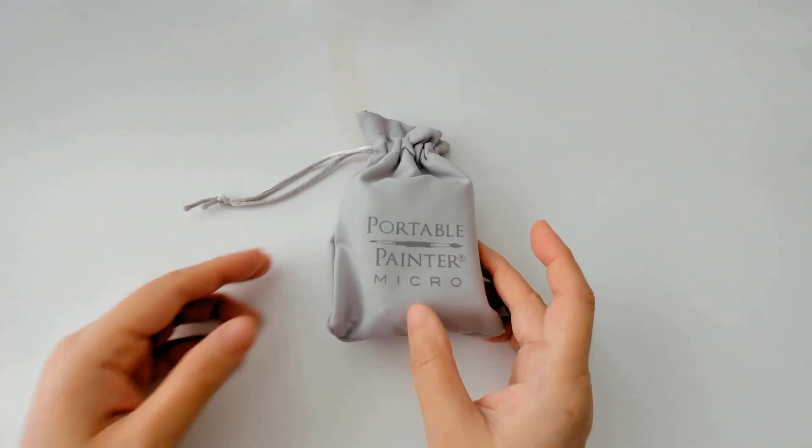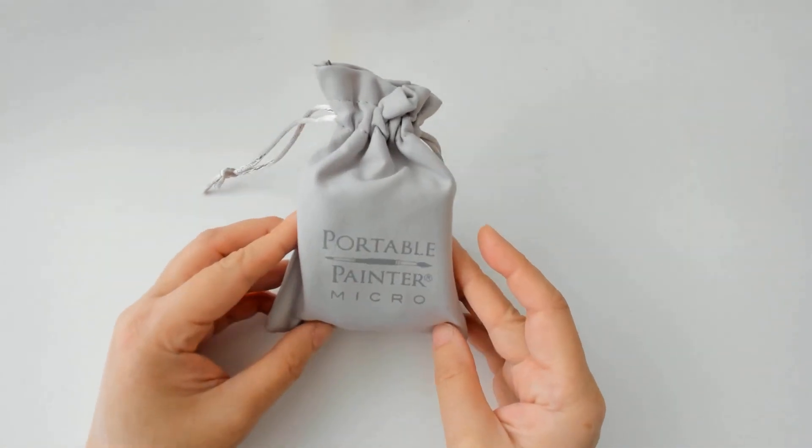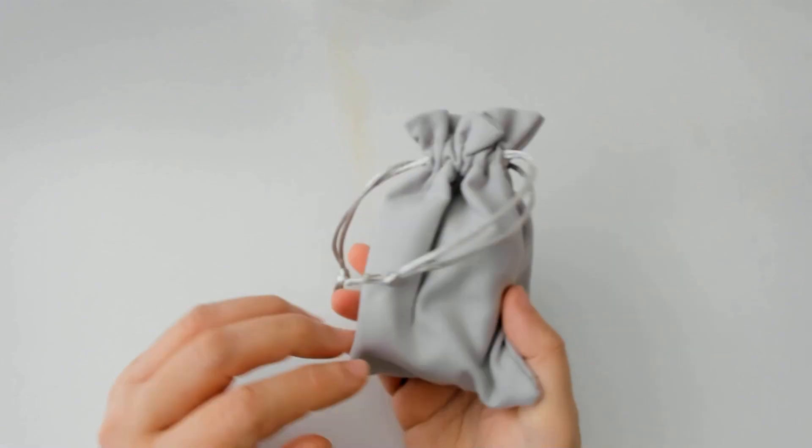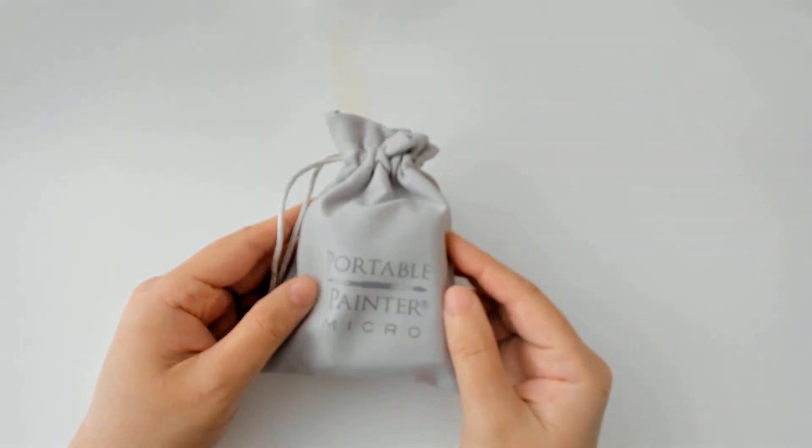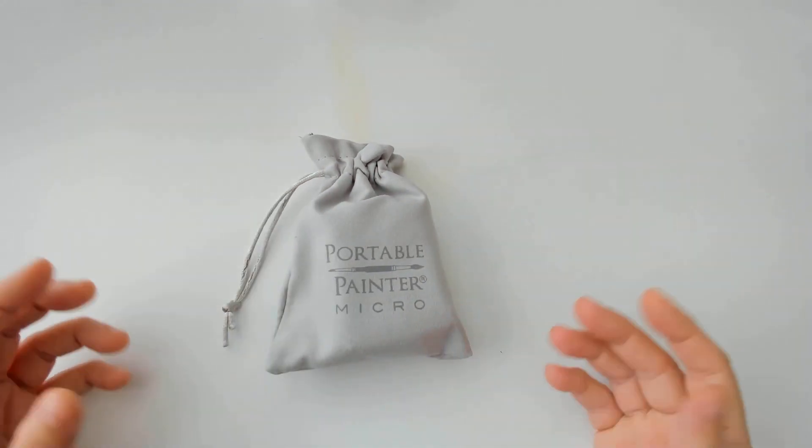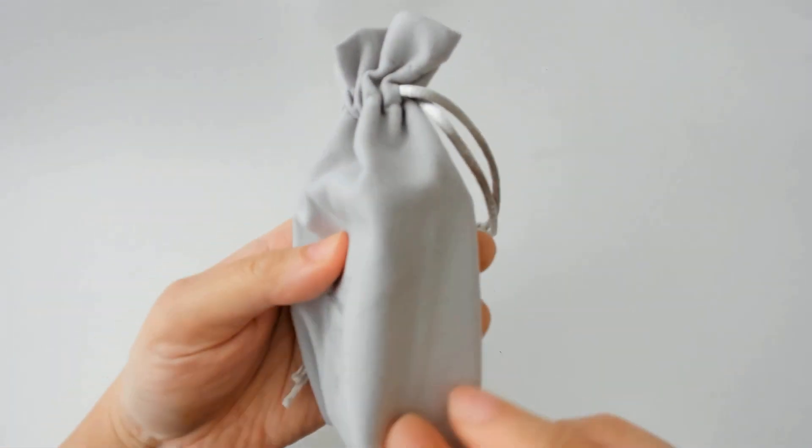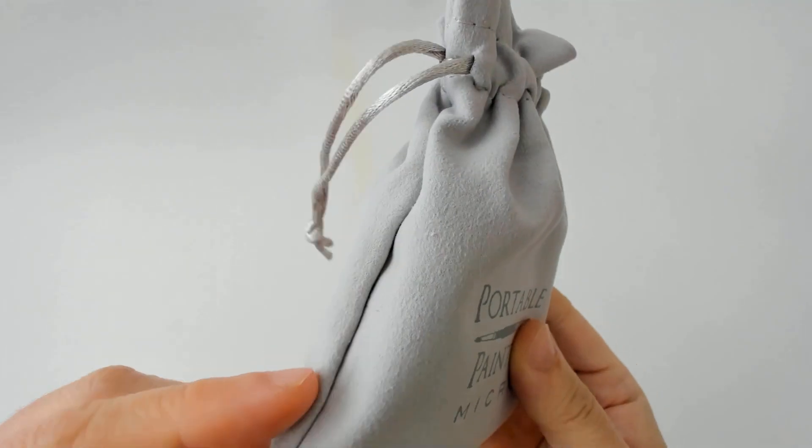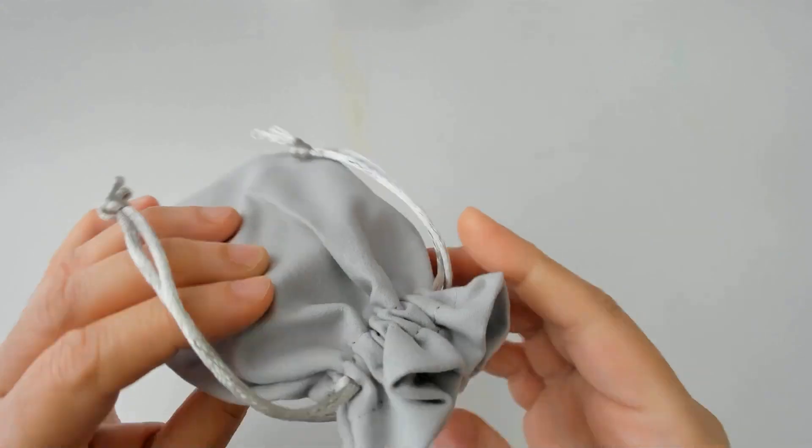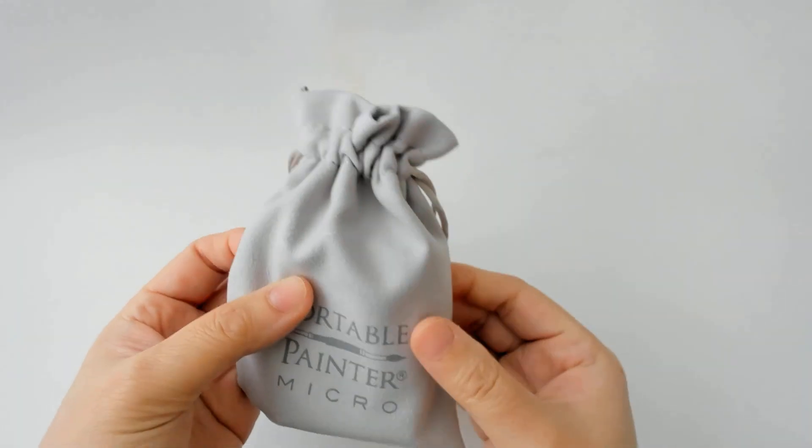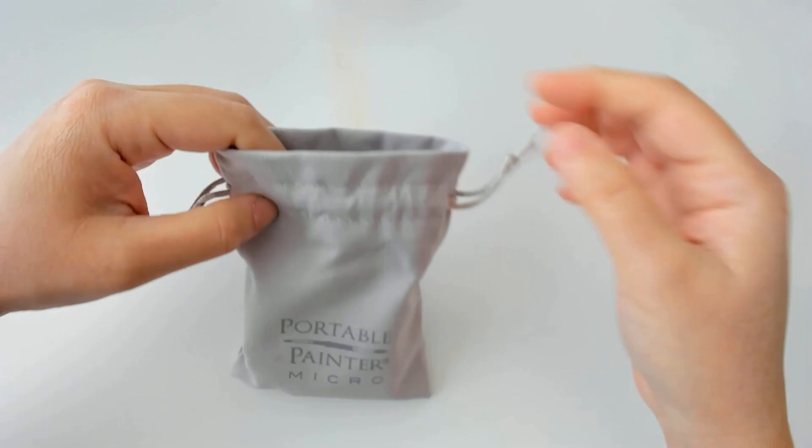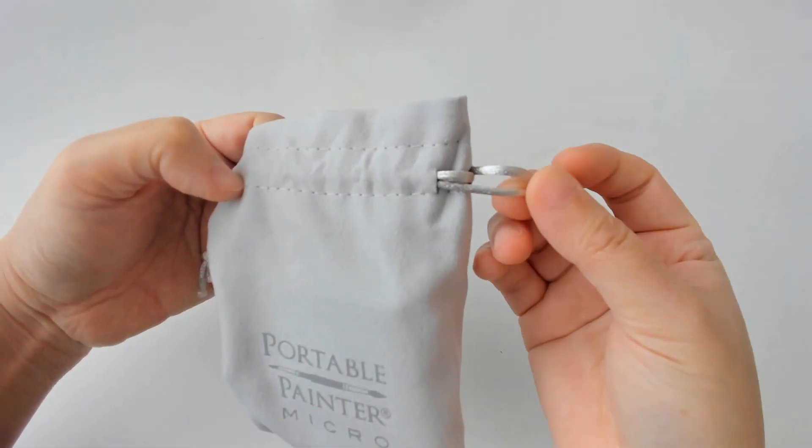First, let's take a look at this Portable Painter Micro. I don't actually need it, but because it came in a bundle, I felt like I wanted to try it. It's always fun to try new palettes, and especially small palettes, and also big palettes, any kind of palette. It comes in a nice cloth pouch like this. It feels kind of almost velvety, but not quite. I don't know what that material is, but it's pretty nice. It has a silver drawstring.